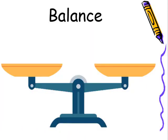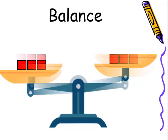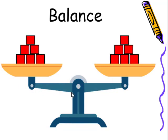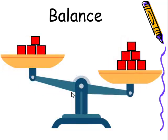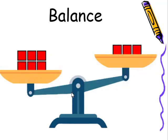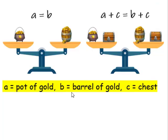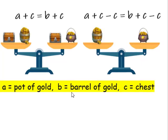Let's take a look at this balance. If I add three blocks to my left-hand side, it's no longer balanced. For this to be balanced, I would have to add three blocks to my right-hand side. If I take away two blocks from my left-hand side, it's no longer going to be balanced. I would have to take away two blocks from my right-hand side. If I double my left-hand side, I'm going to have to double my right-hand side so the two sides are balanced. If a pot of gold weighs the same as a barrel of gold, if I add the same amount to both sides, it's going to remain balanced. Same thing is if I take away the same amount, it's still going to remain balanced.